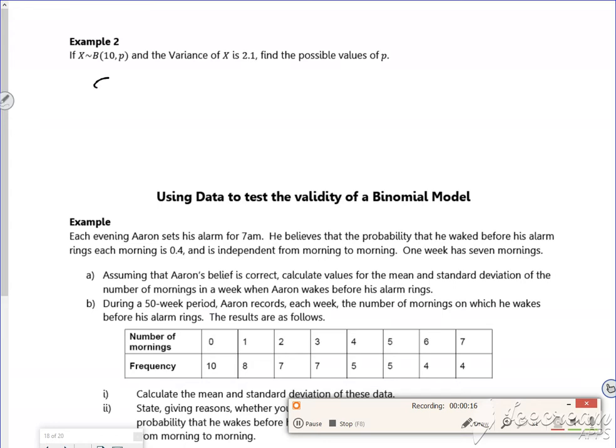So the variance, sigma squared, is np(1-p). So 2.1 equals 10p(1-p). Expanding the brackets, I've got 10p minus 10p squared. So 10p squared minus 10p plus 2.1 equals 0.